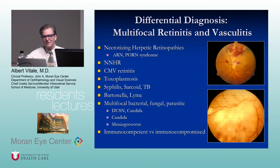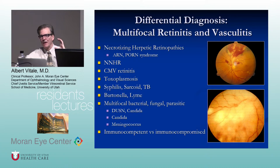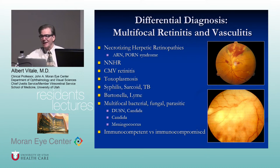Differential diagnosis of multifocal retinitis and vasculitis: necrotizing herpetic retinopathy — ARN and PORN — non-necrotizing herpetic retinopathy, CMV, toxo, syphilis, sarcoid, TB. Those are the major players. Things get more difficult when the patient is immunocompromised, because the differential broadens, and history is very important for risk factors for endogenous endophthalmitis such as IV drug use or previous surgery.